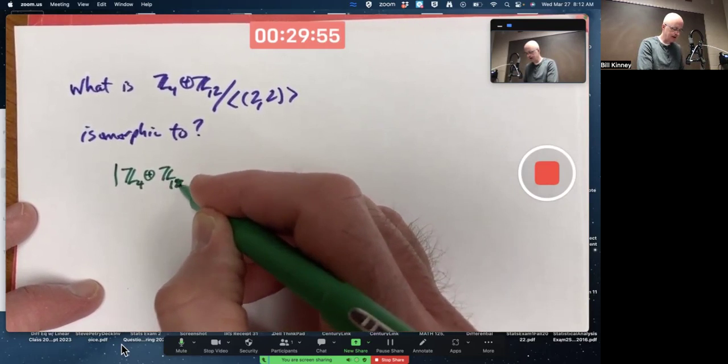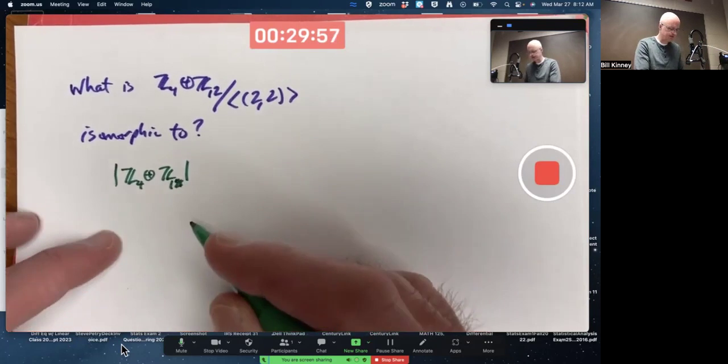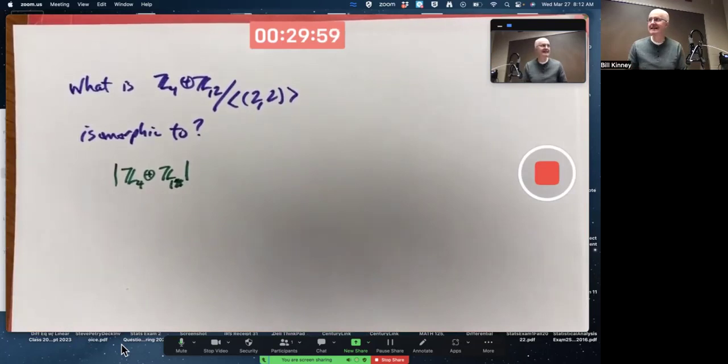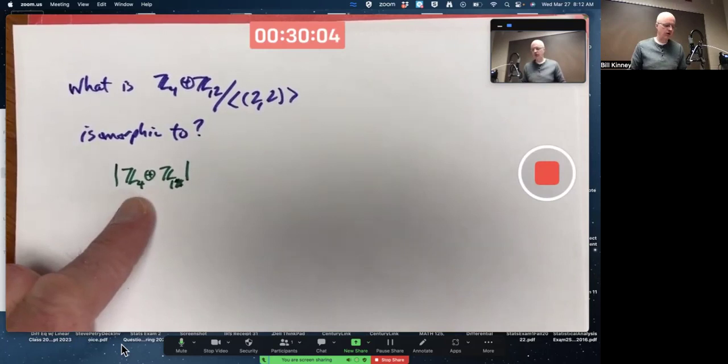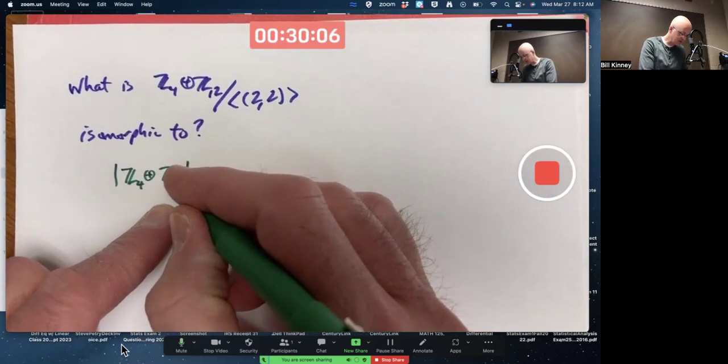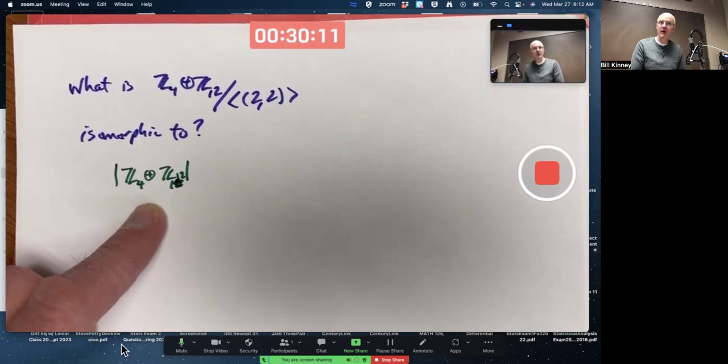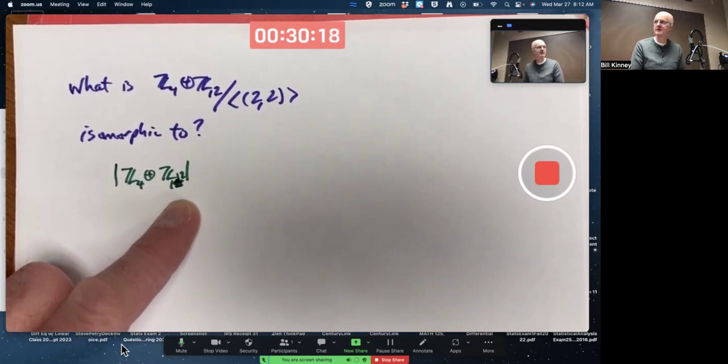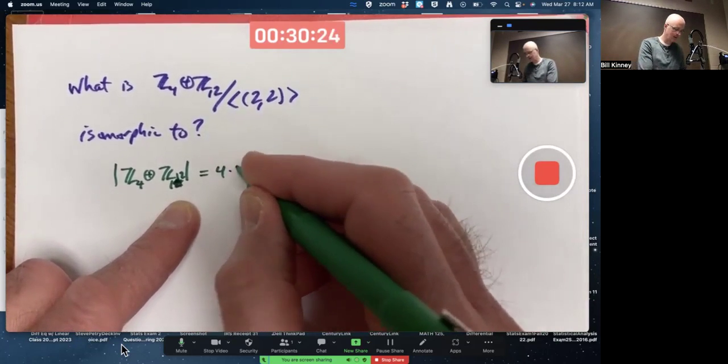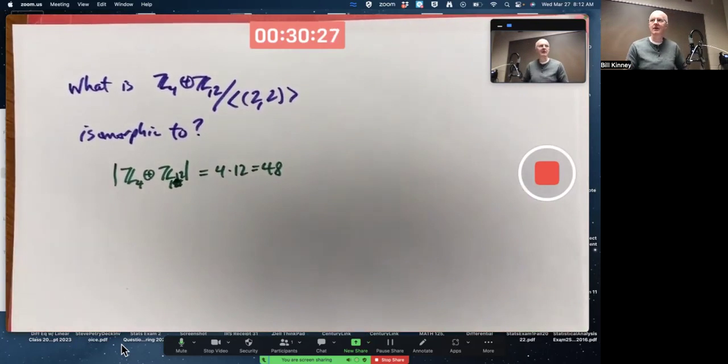Here we have the external direct product of Z4 and Z12 as a set. That's the set of all ordered pairs - first element from Z4, second element from Z12. There's four choices for A, the first component (0, 1, 2, and 3), and 12 choices for B, the second component (0 through 11). So you have 4 times 12, 48 elements in that group.